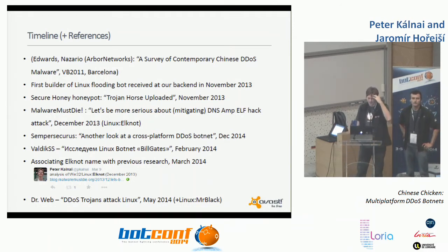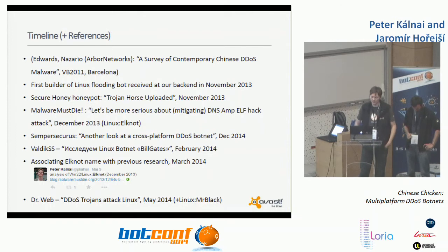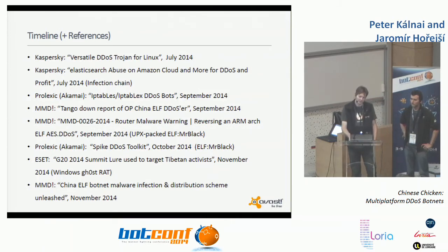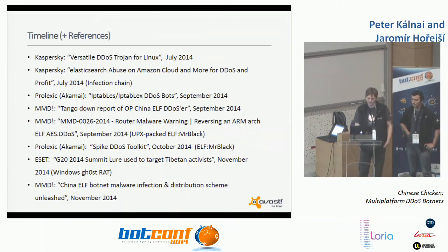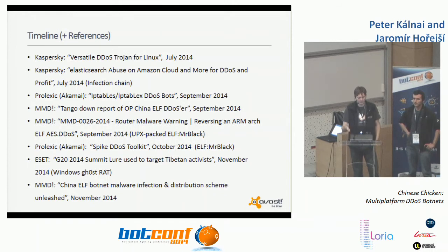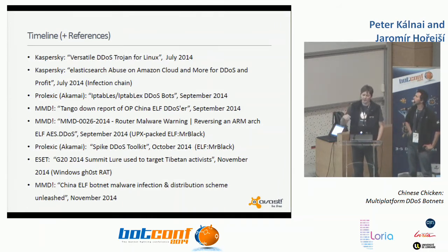In May 2014, Dr. Web published a blog about DDoS trojans for Linux, and Mr. Black was mentioned for the first time. Blog posts from Kaspersky followed, including one explaining the infection vector. In September 2014, two reports from Prolexic on IPtable SX and Mr. Black were published, including numbers on the volume of these threats. Meanwhile, Malware Must Die published many articles on this kind of attacks.